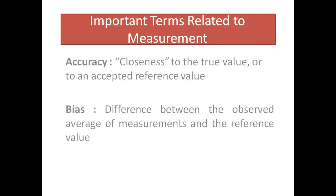Let's discuss important terms related to measurement. First is accuracy, which is the closeness to the true value or to an accepted reference value. Bias is the difference between the observed average of measurements and the reference value.